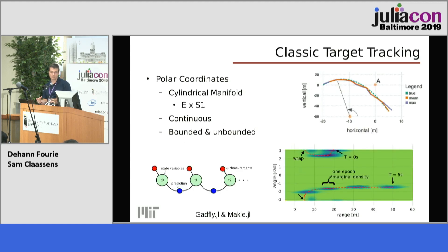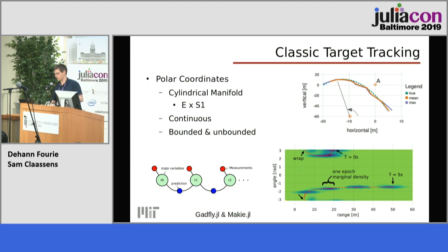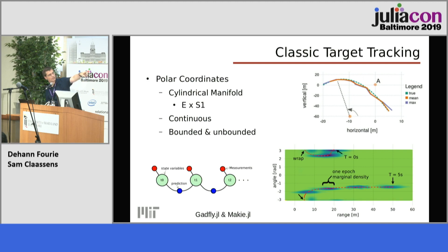Here's classic target tracking. Imagine you've got a bearing and a range measurement for something flying overhead. You can build a factor graph where each of the measurements are red factors, and T0, T1, T2 are the variables of interest. What's interesting is you're estimating on a manifold which is cylindrical — rotations and translation. The pose positions are draped over in green, and the blue are the marginal estimates from different positions in time.